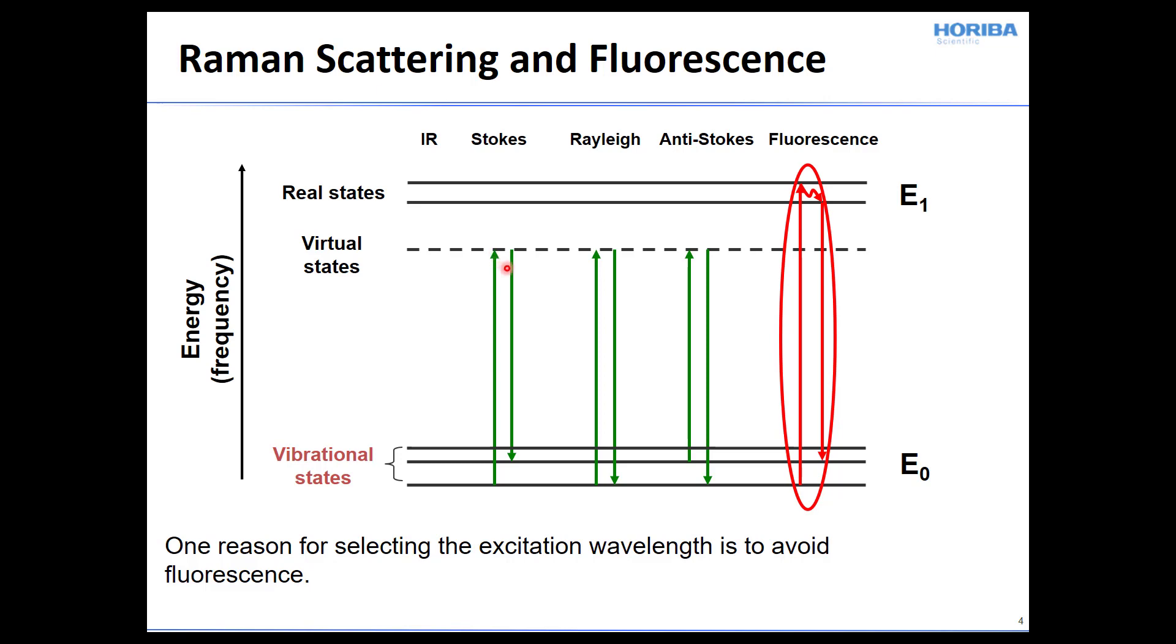whereupon energy can be transferred from the incident photon to the molecule, and a second photon is scattered such that that second photon has an energy less than the incident photon by an amount equal to the quantum of energy that was transferred. That is to say, the photon is scattered at lower energy, longer wavelength, and the molecule ends up in the first excited vibrational state.